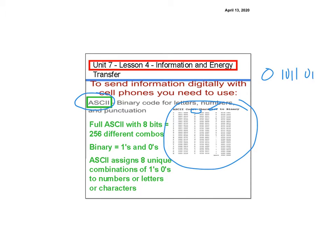And then there's some digits like ones and zeros. So this is like O, and it says 1, 0, 1, 1, 0, 1, 1, 1. So that code, 1, 0, 1, 1, 0, 1, 1, 1, that would tell the computer that's the letter O.